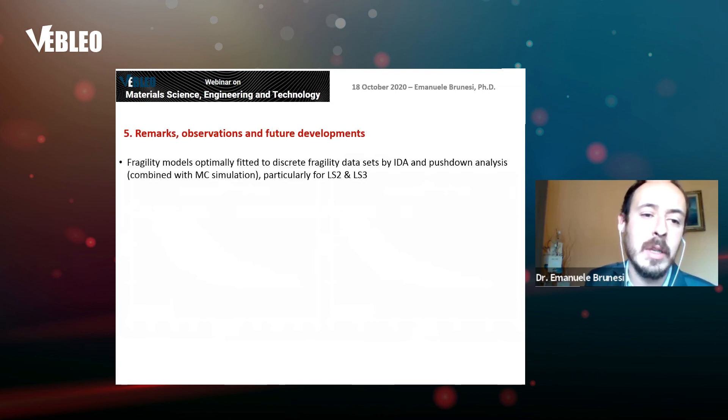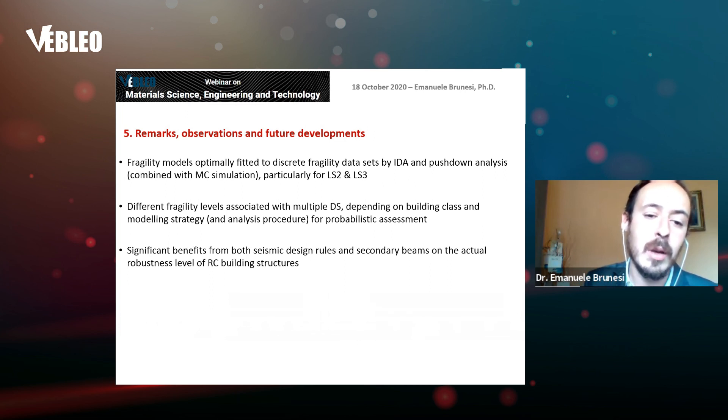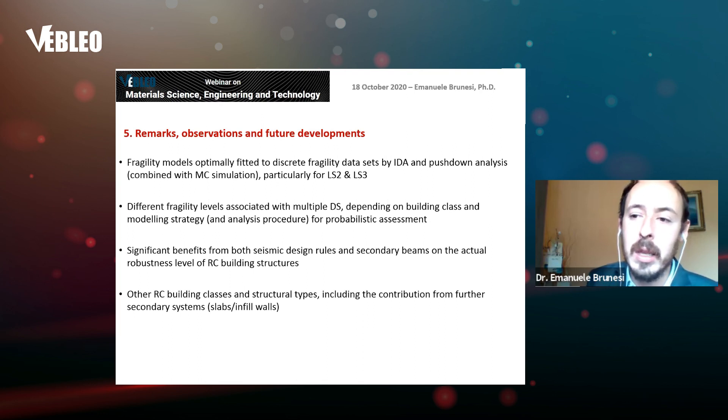Some remarks: fragility models were optimally fitted to discrete fragility datasets by both IDA and pushdown analysis, particularly for significant and complete damage states. Different fragility levels were associated with multiple damage states depending on building class, modeling strategy, and analysis procedure. Significant benefits were obtained from seismic design rules and secondary beams on system robustness. Clearly, we can do this same analysis framework for other reinforced concrete building classes and structural types, considering contribution from secondary systems such as infills and slabs. Some work is ongoing with slabs and some has been published for infills.